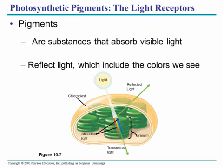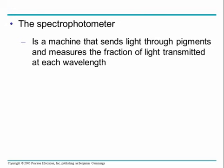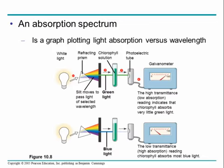In plants, green is bouncing off, and green is the least successful color for performing photosynthesis. We can measure light with a machine called a spectrophotometer. It sends the light through the pigments and measures how much light passes through versus how much gets absorbed.